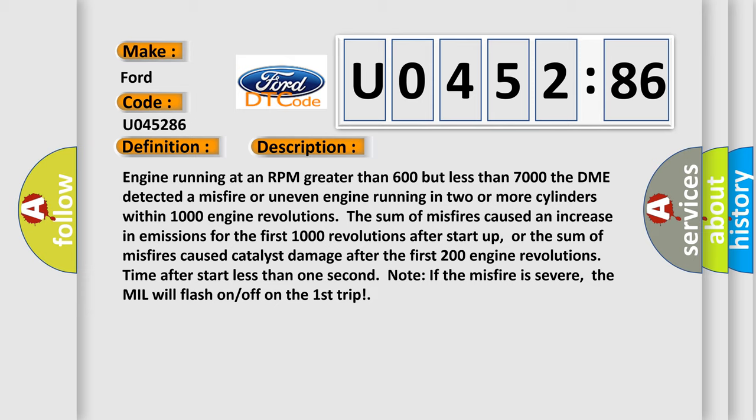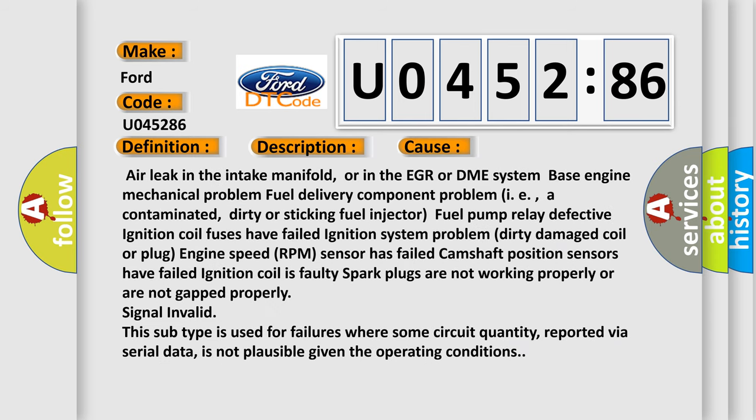This diagnostic error occurs most often in these cases: air leak in the intake manifold or in the EGR or DME system, base engine mechanical problem, fuel delivery component problem (contaminated, dirty or sticking fuel injector, fuel pump relay defective), ignition coil fuses have failed, ignition system problem, dirty damaged coil or plug, engine speed RPM sensor has failed, camshaft position sensors have failed, ignition coil is faulty, spark plugs are not working properly or are not gapped properly. Signal invalid: this subtype is used for failures where some circuit quantity, reported via serial data, is not plausible given the operating conditions.